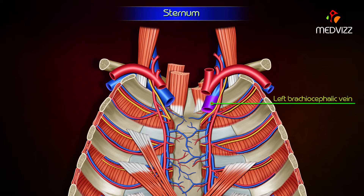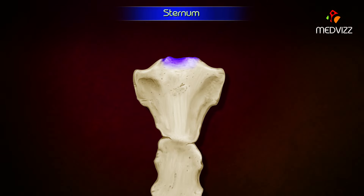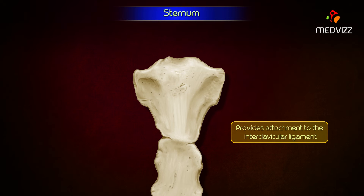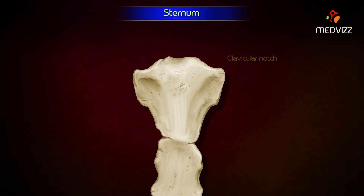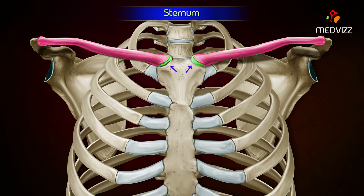The upper border is thick, rounded, and concave. It presents a notch called the suprasternal notch or jugular notch. It provides attachment to the interclavicular ligament. The clavicular notch on either side of the suprasternal notch articulates with the clavicle to form the sternoclavicular joint.